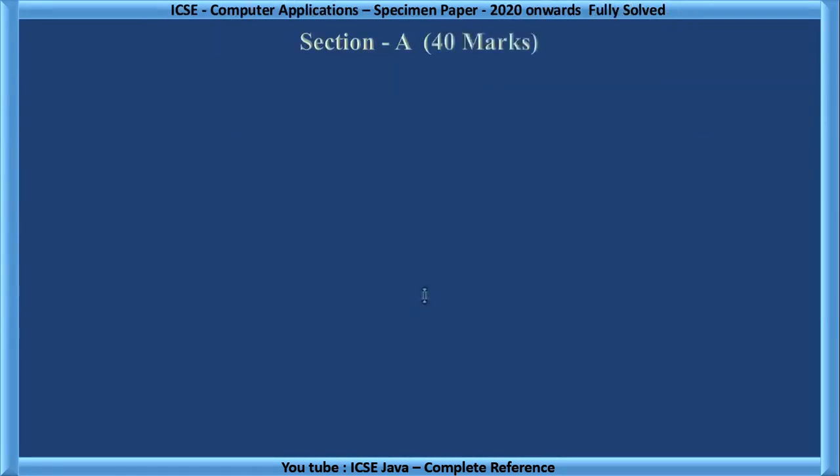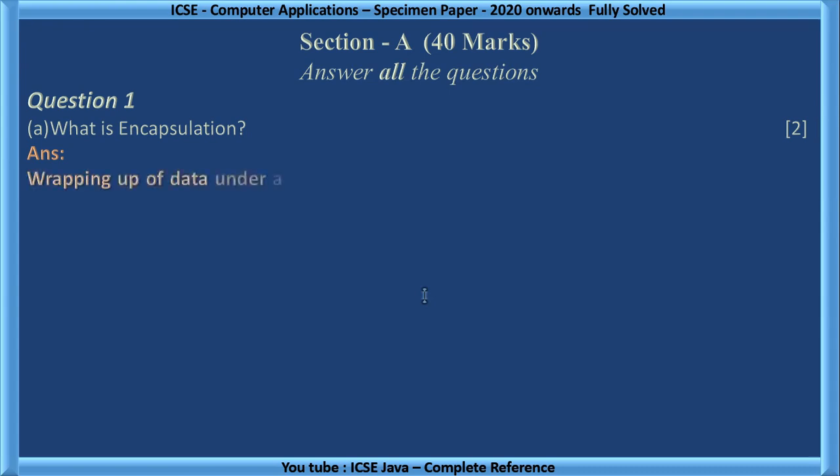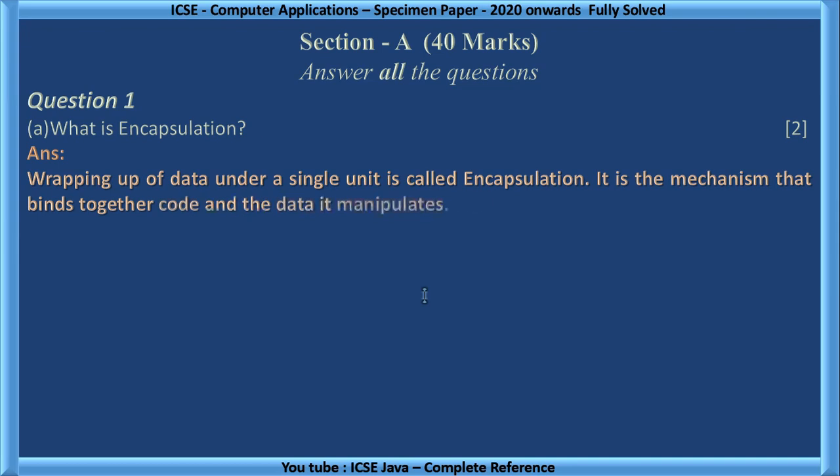Section A, 40 marks, answer all the questions. Question 1, what is encapsulation? Wrapping up of data under a single unit is called encapsulation. It is the mechanism that binds together code and the data it manipulates. This is one of the OOPS concepts.